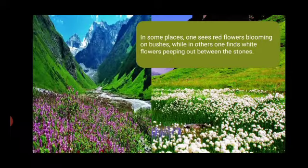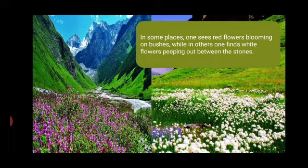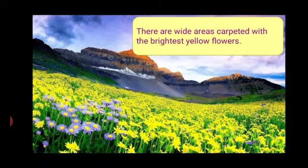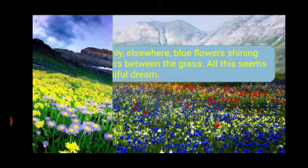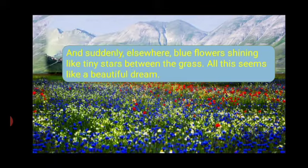In some places, one sees red flowers blooming on bushes, while in others one finds white flowers peeping out between the stones. There are wide areas carpeted with the brightest yellow flowers. And suddenly, there are blue flowers shining like tiny stars between the grass. All this seems like a beautiful dream.